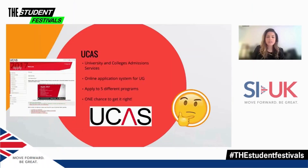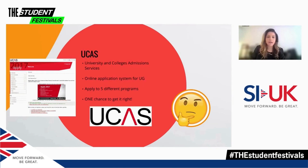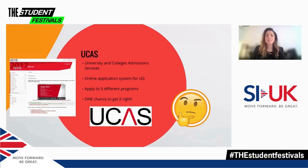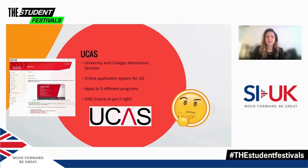To start your application, you first have to create a profile for yourself on the UCAS website. You can just go onto Google, find UCAS, and the website looks a little bit like on the left of the screen. I won't go into too much detail on how to set up your profile today, as it's a 20-minute session, but it's a very quick and simple process, and once you log in, it's a very simple form and quite self-explanatory.